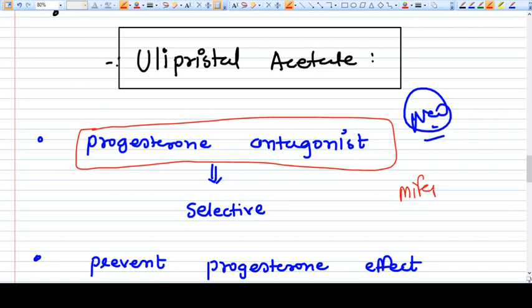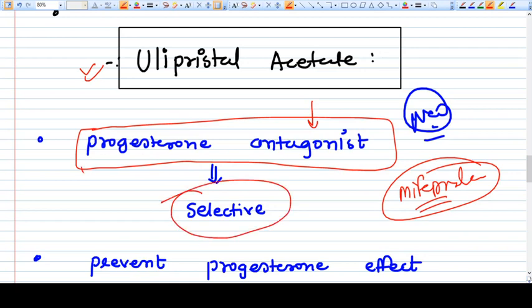Mifepristone, which is a very popular drug we all know. But ulipristal is also a progesterone antagonist. The difference between mifepristone and ulipristal acetate is that this drug is a selective progesterone antagonist, or we can call it a selective progesterone receptor modulator.